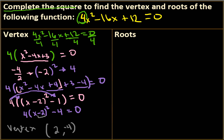And now we're going to finish completing the square, and we're going to solve to find our roots. So we're going to take our equation, 4 times x minus 2 squared minus 4 equals 0.